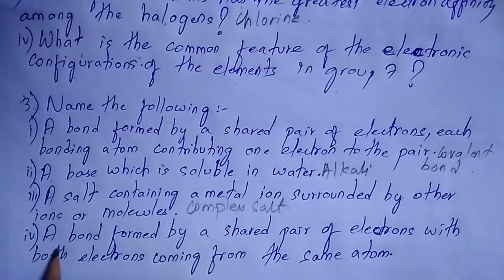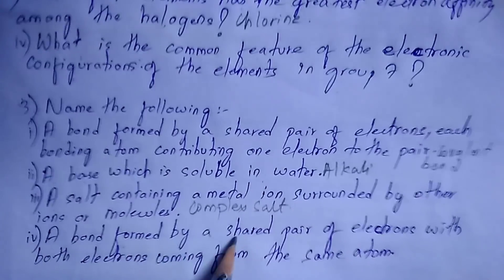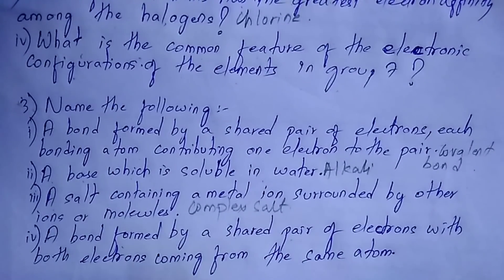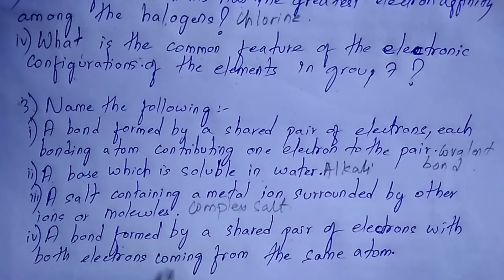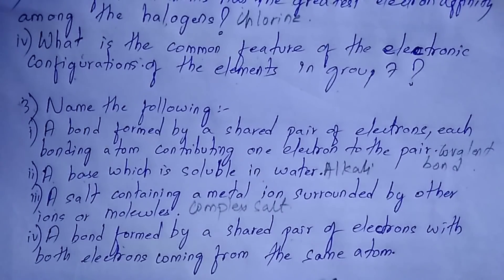Next question: a bond formed by a shared pair of electrons with both electrons coming from the same atom. It is coordinate bond.